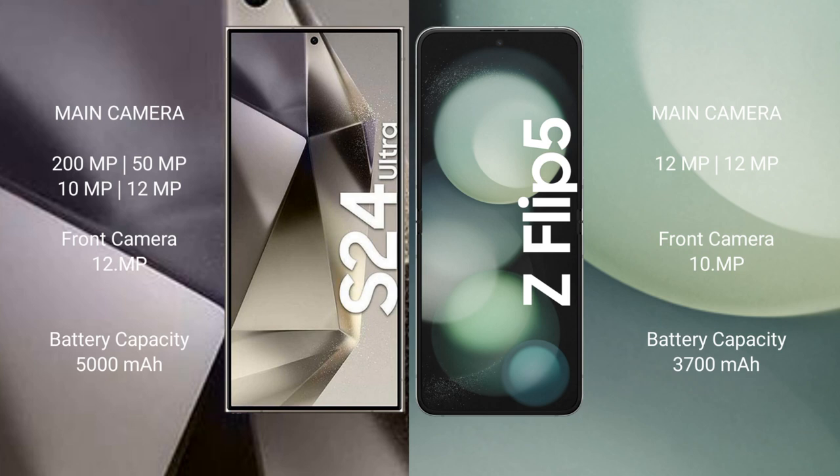The Samsung Galaxy S24 Ultra features a rear quad-camera setup: 200 MP main, 50 MP periscope telephoto, 10 MP telephoto, and 12 MP ultrawide, with a 20 MP front camera. The Samsung Galaxy Z Flip 5 has a dual rear camera with a 12 MP main and a 20 MP front camera.